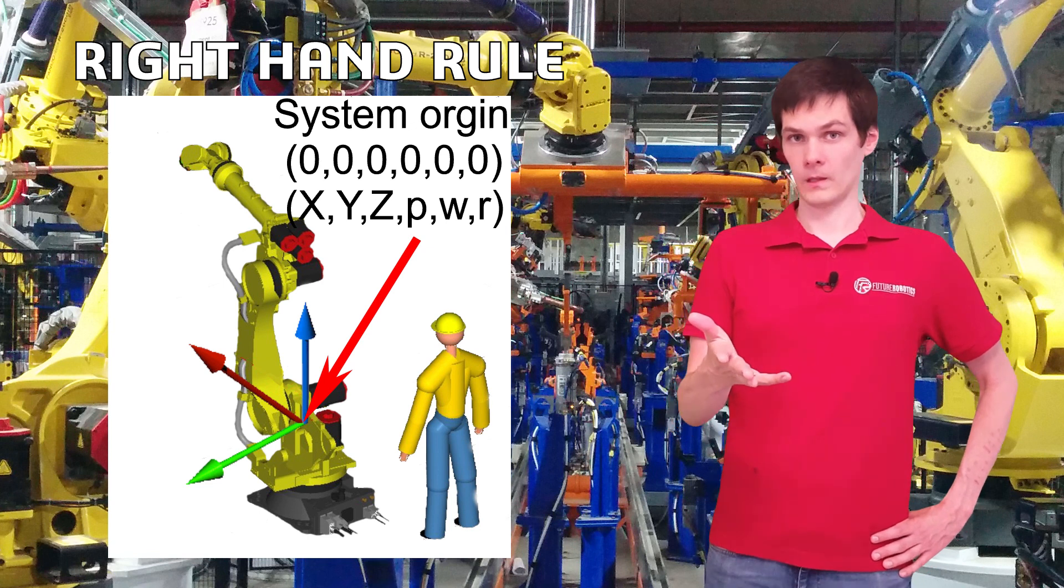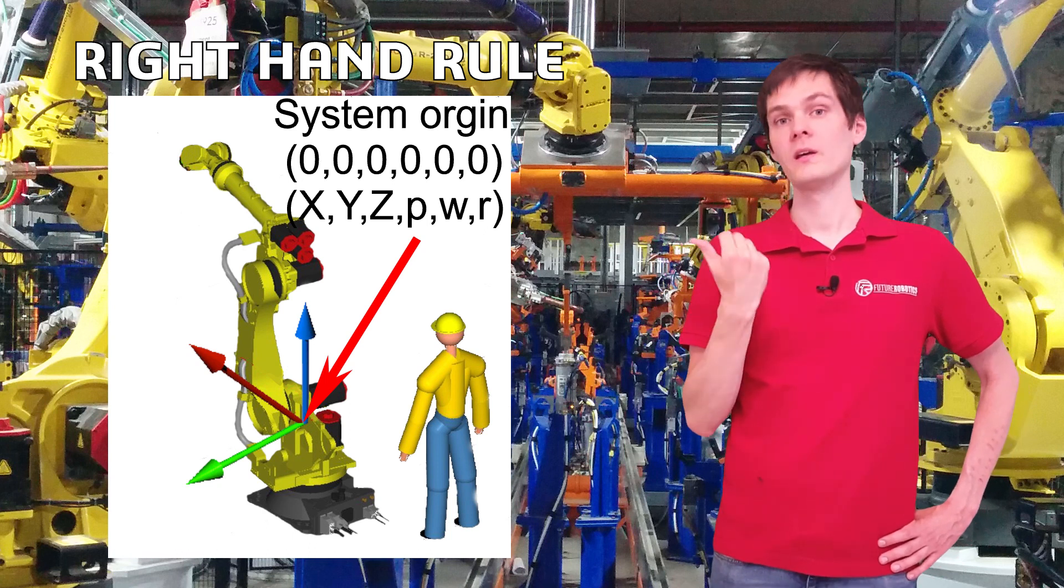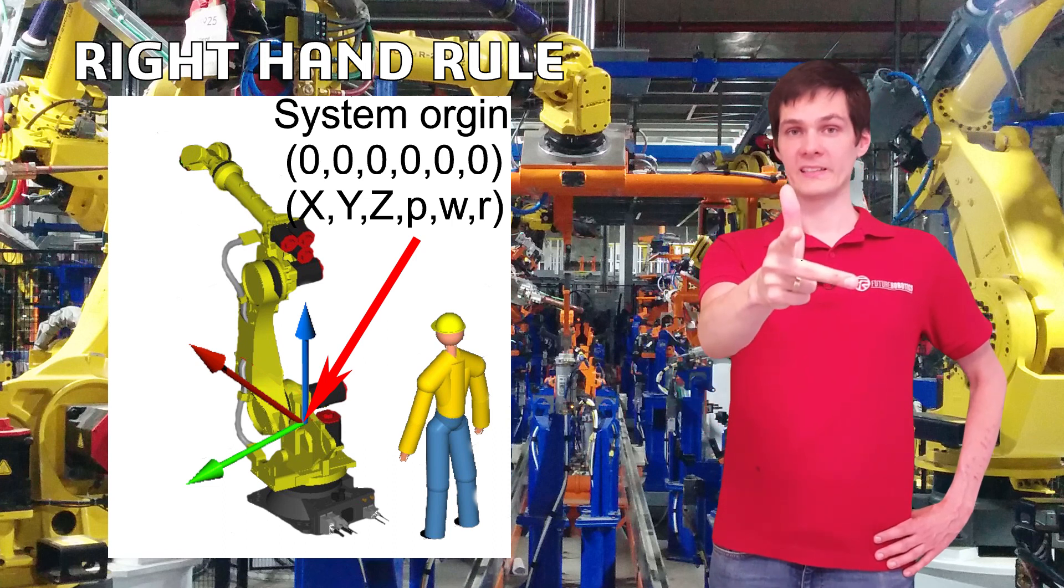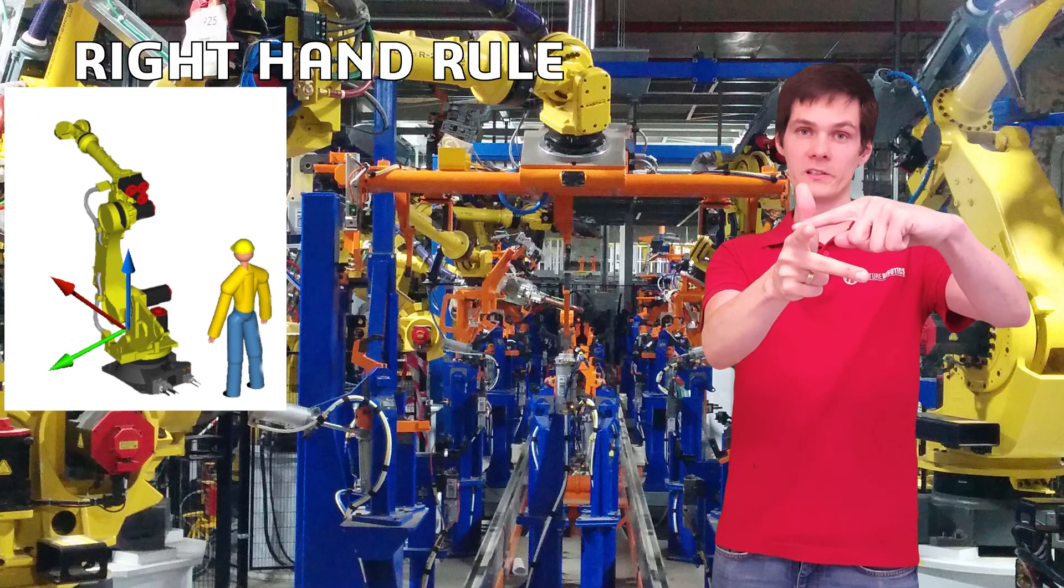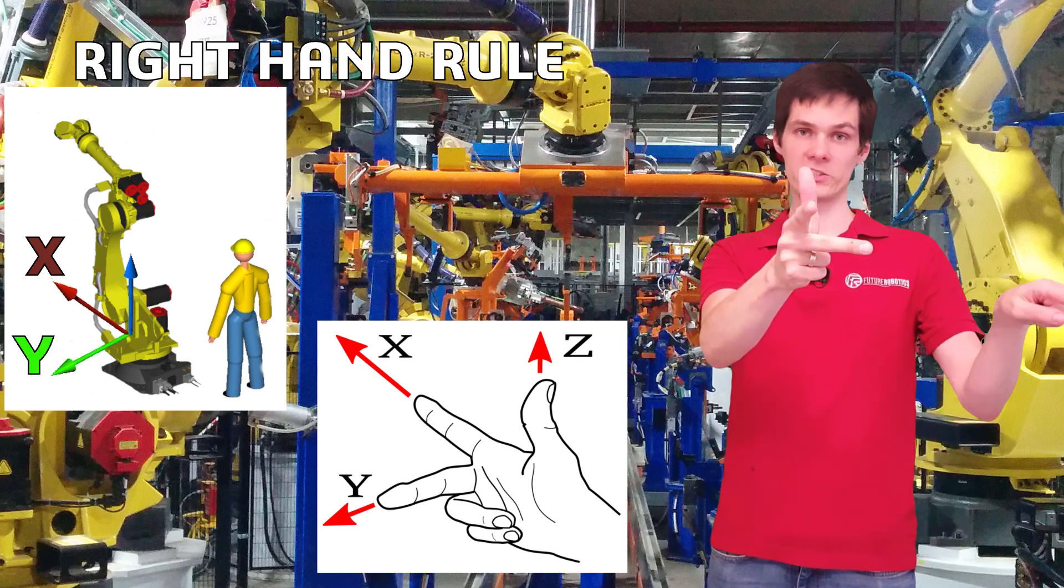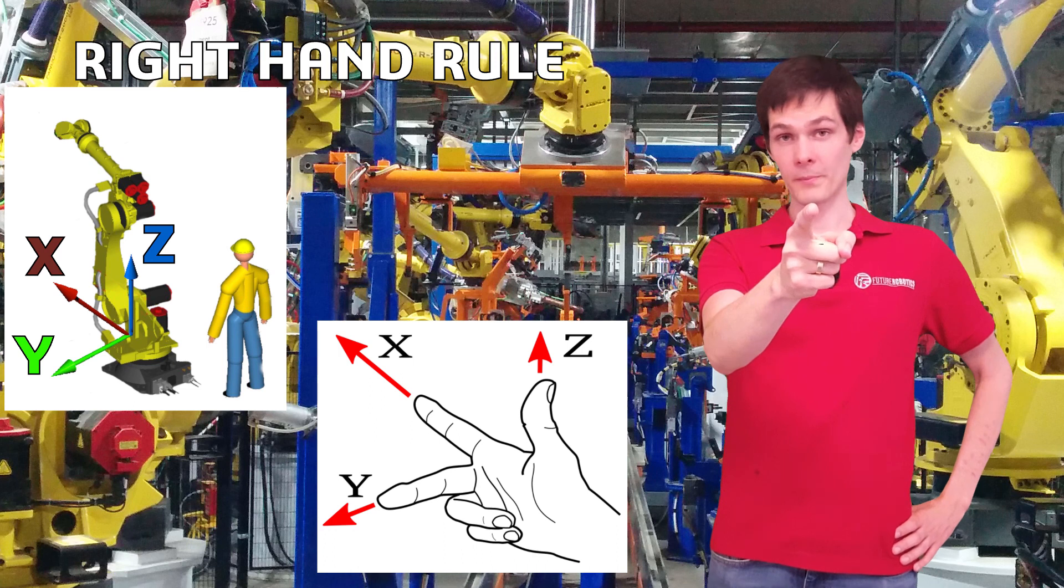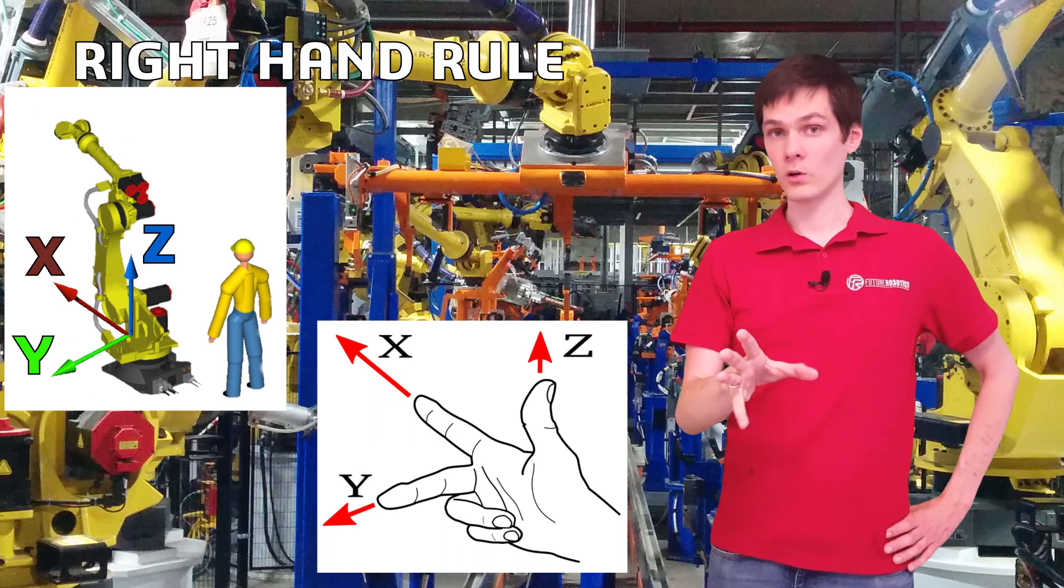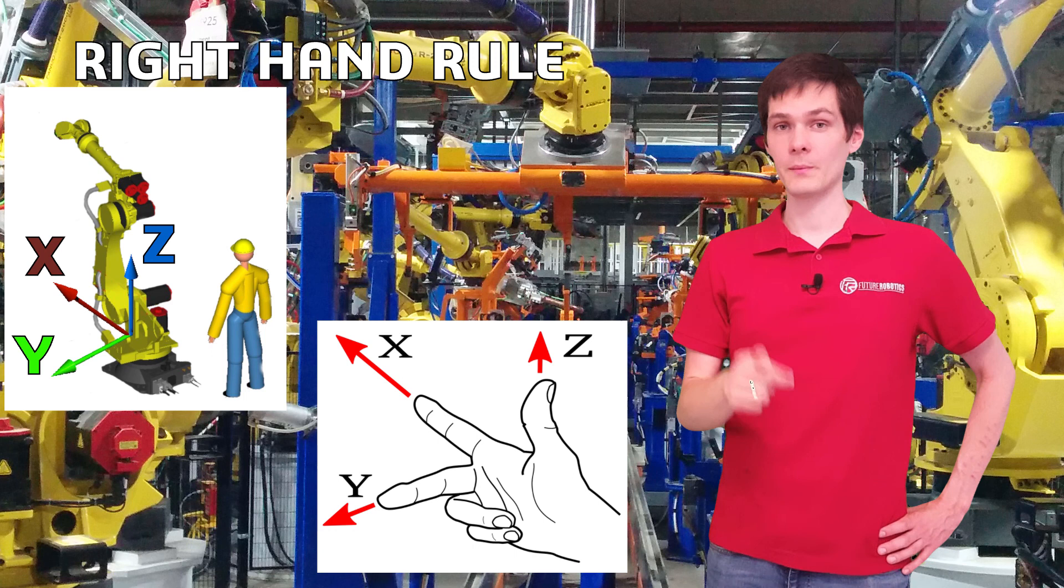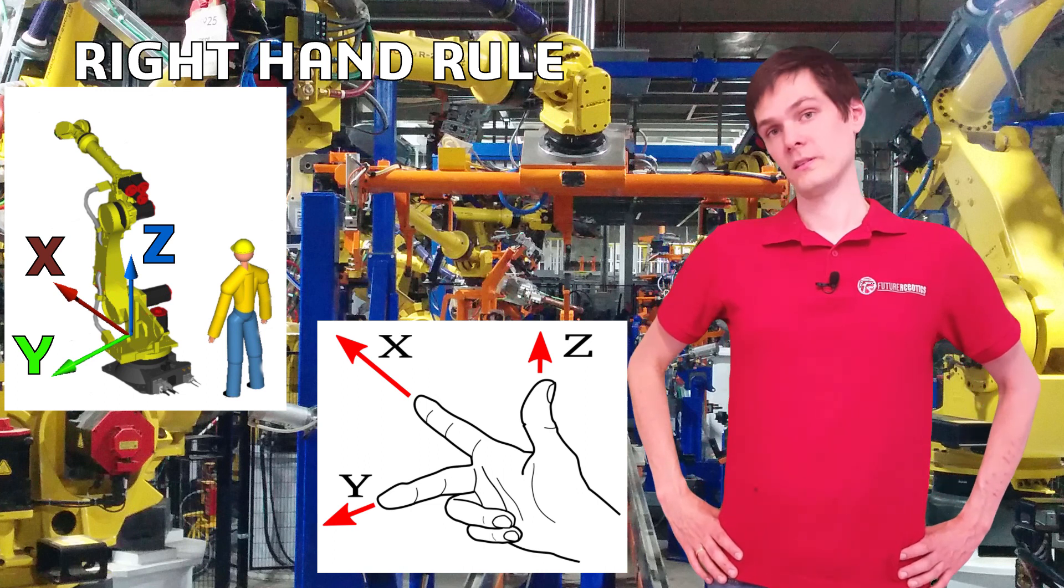So now take your hand and you want to put that coordinate system, that 3D coordinate system over there. So take your right hand, put it like this and right now that finger is going to point into the x positive direction. That finger is going to point into y positive direction and that finger points into z positive direction. So remember that because we're going to use that for jogging. So now you know whenever you come to the robot and somebody will ask you to move it, you're going to choose the world coordinate system and jog using that system.